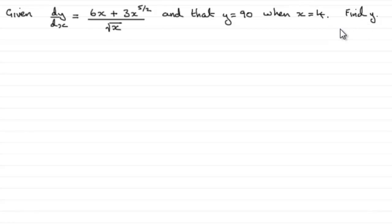So how are we going to do this? How are we going to get y? Well if we know what dy by dx is, then y is going to equal the integral with respect to x of this particular expression here. So we'll just write down what that is again: 6x plus 3x to the power 5 over 2, all divided by the square root of x. And we're integrating this with respect to x. So don't forget to write that dx on the end.